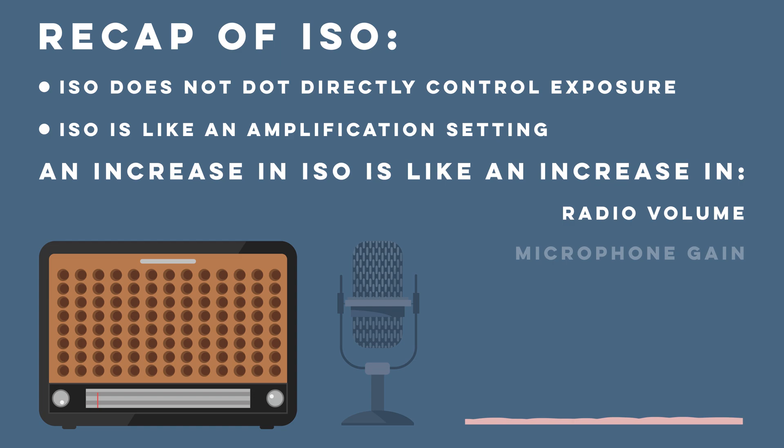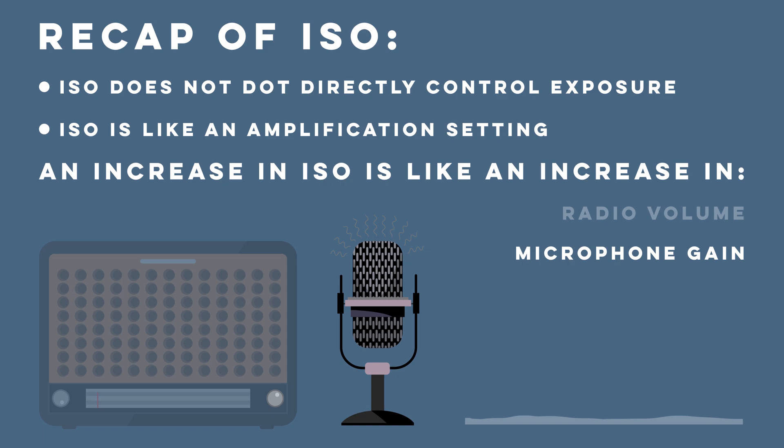Just like you can't crank the ISO too far if you're working in low light, because noise and grain appears. Same goes for a microphone — if you're trying to record something with lots of background noise and want to increase the gain, not only does the voice get amplified, but the background noise does as well. Since ISO isn't part of the exposure triangle, what does this mean?